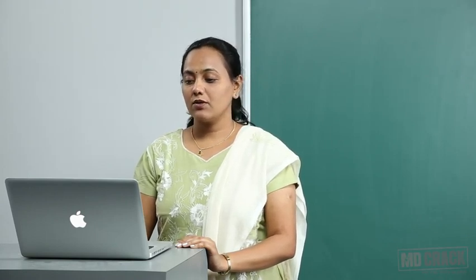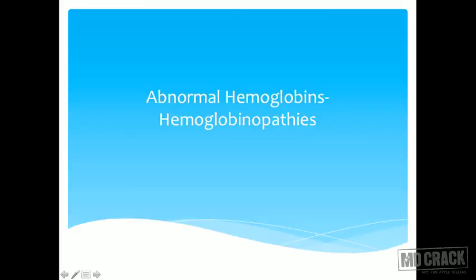Before we go further, let us look at the globin genes. The alpha gene cluster is on chromosome 16, and there are two copies of alpha globin gene — alpha 1 and alpha 2. The beta globin gene is located on chromosome 11, with a single copy. Since there are two copies of each chromosome, the total number of alpha genes is four and beta genes is two.